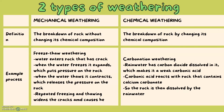An example of chemical weathering is carbonation. This is when rainwater has carbon dioxide dissolved within it, making it a weak carbonic acid. Carbonic acid reacts with rock that contains calcium carbonate, and the rock is then dissolved by rainwater. You do not need to memorize the specific names.